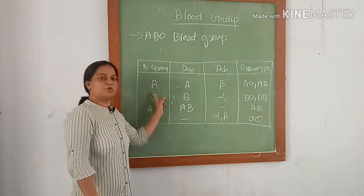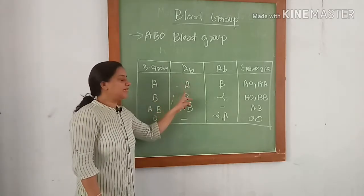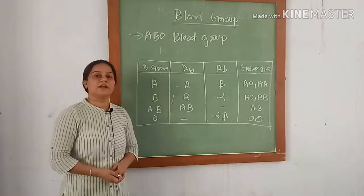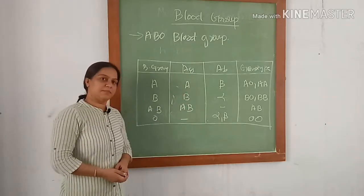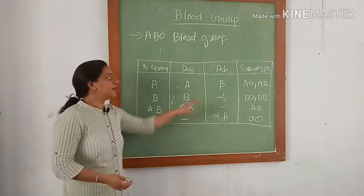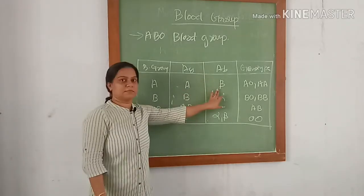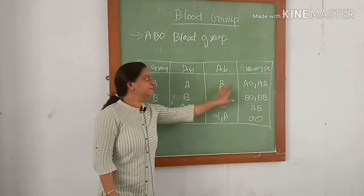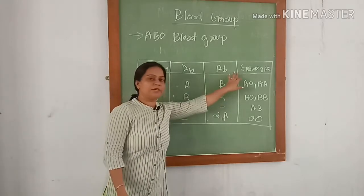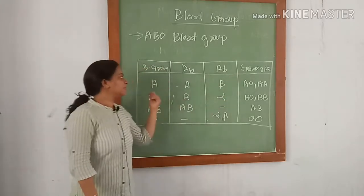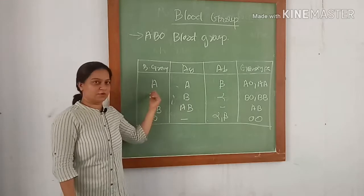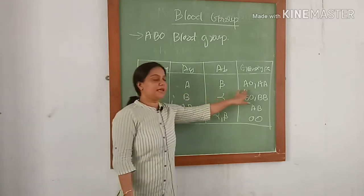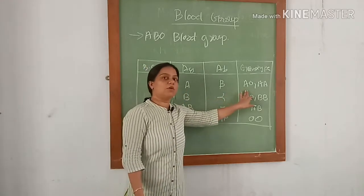For blood group A, antigen A will be present on the red blood cell membrane. In plasma, the antibody will be beta. The genotype for blood group A will be AA or AO.